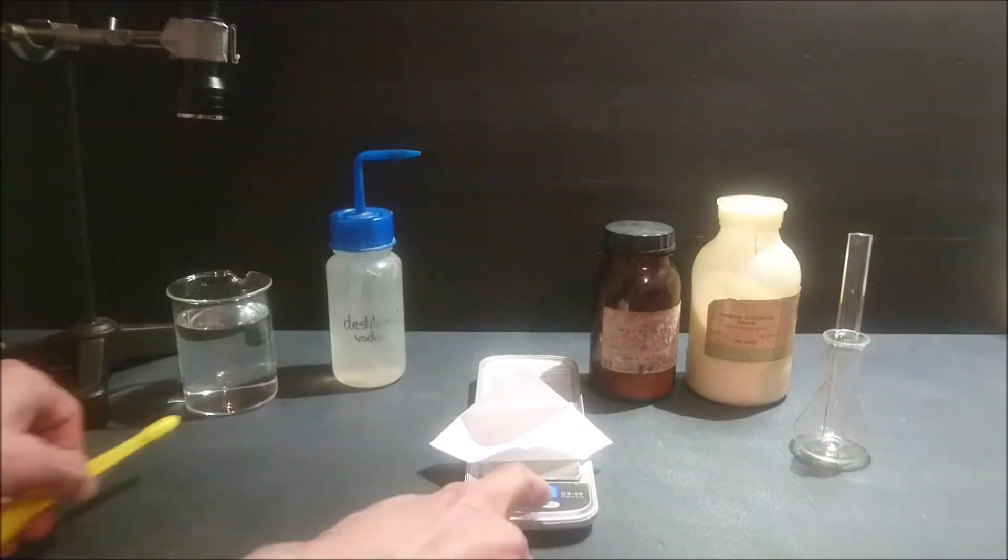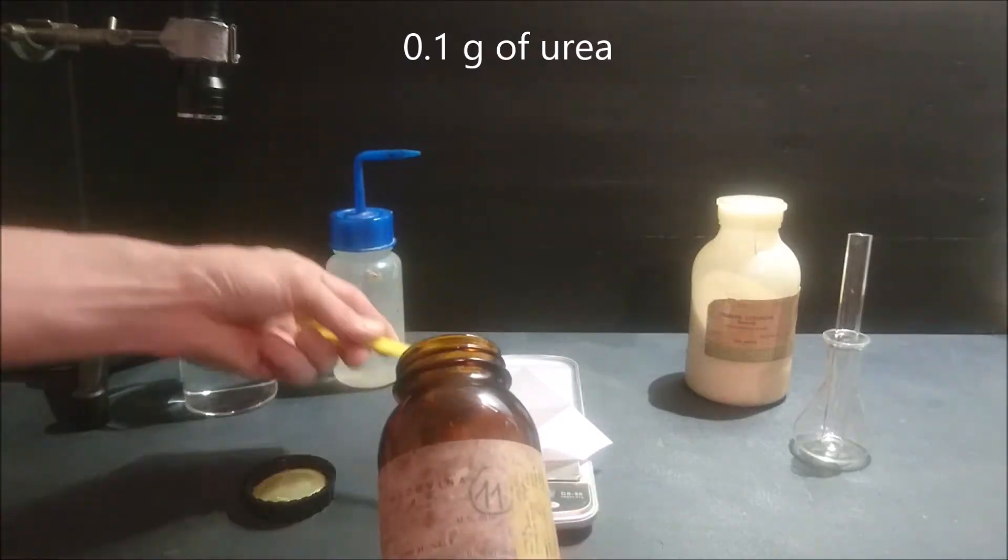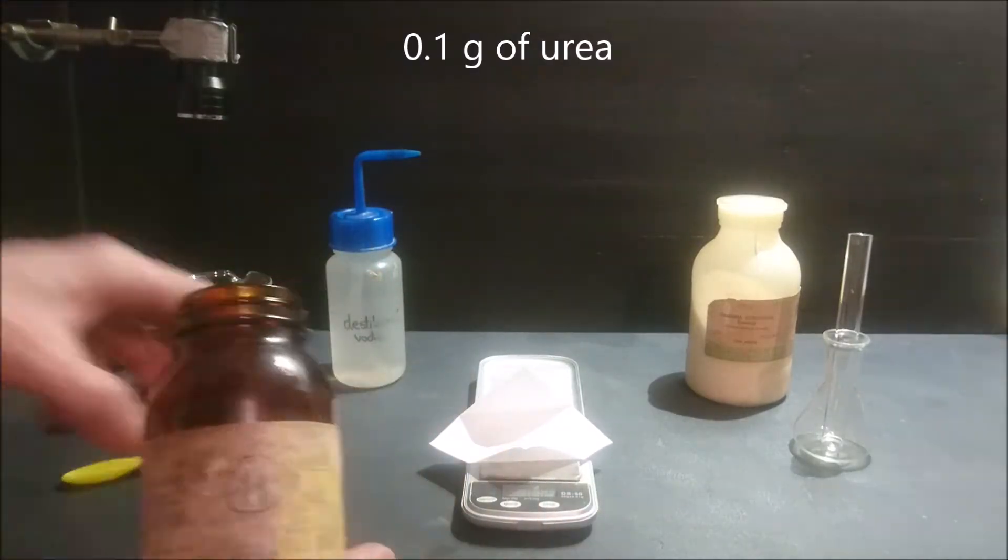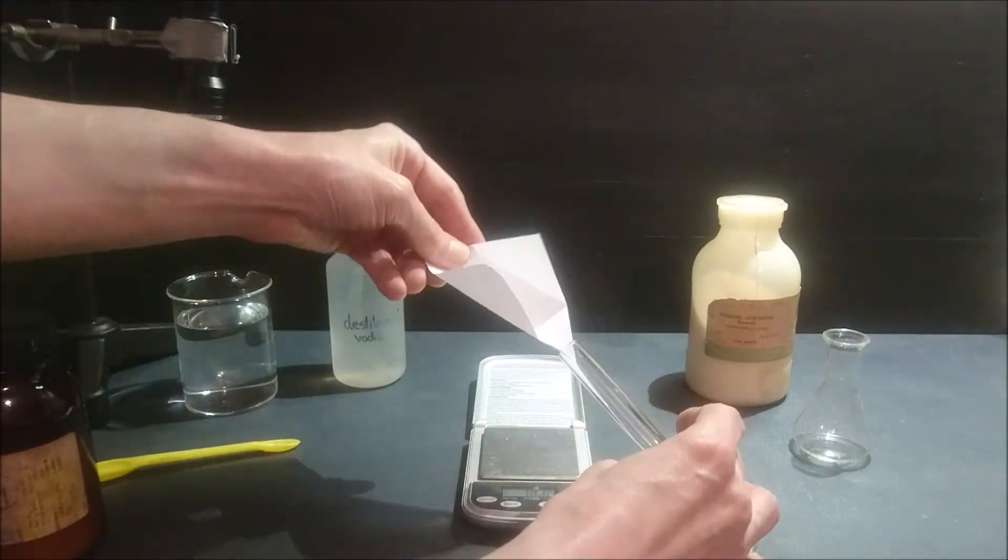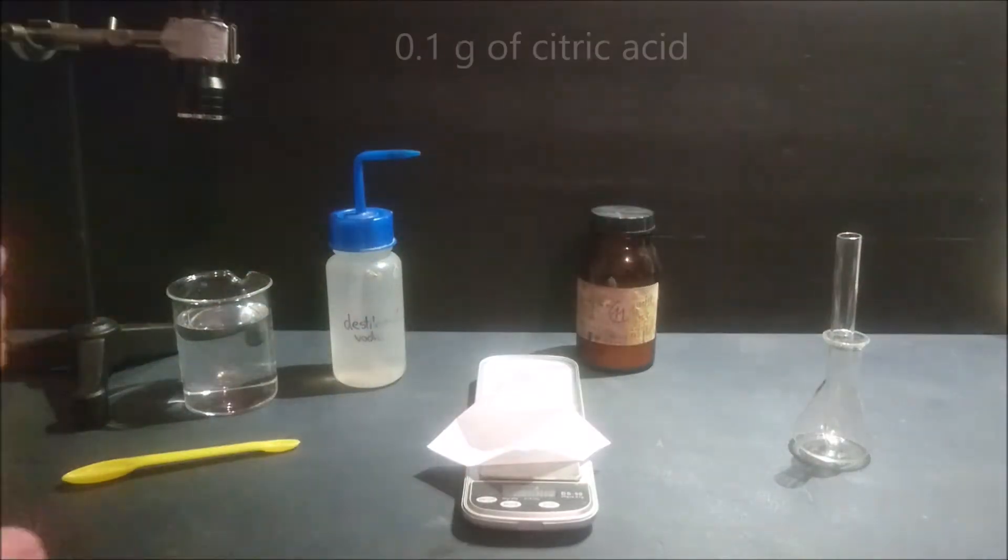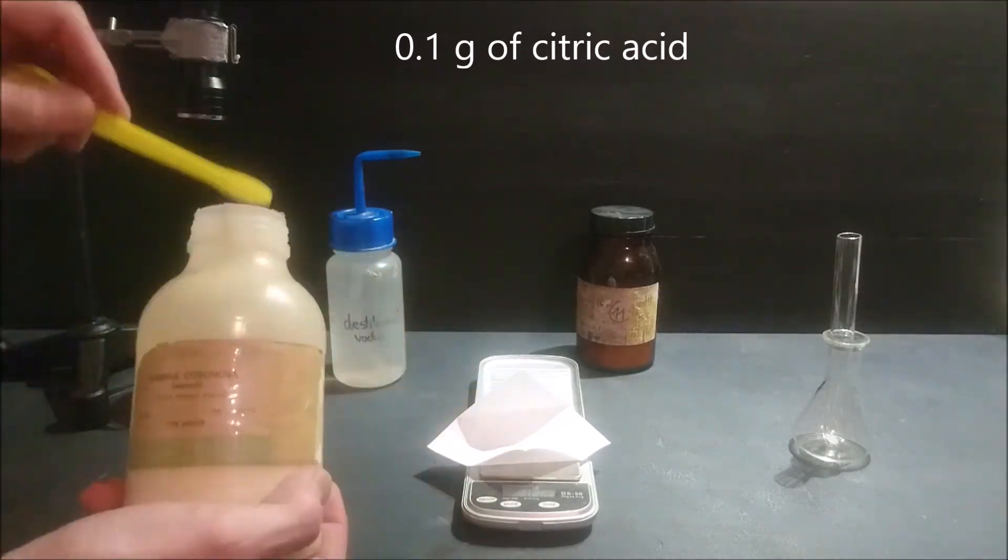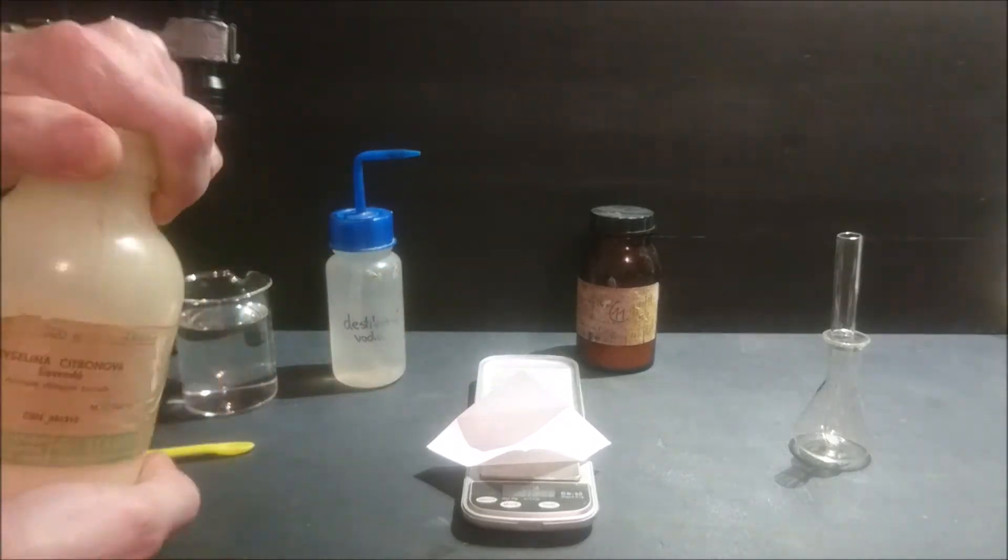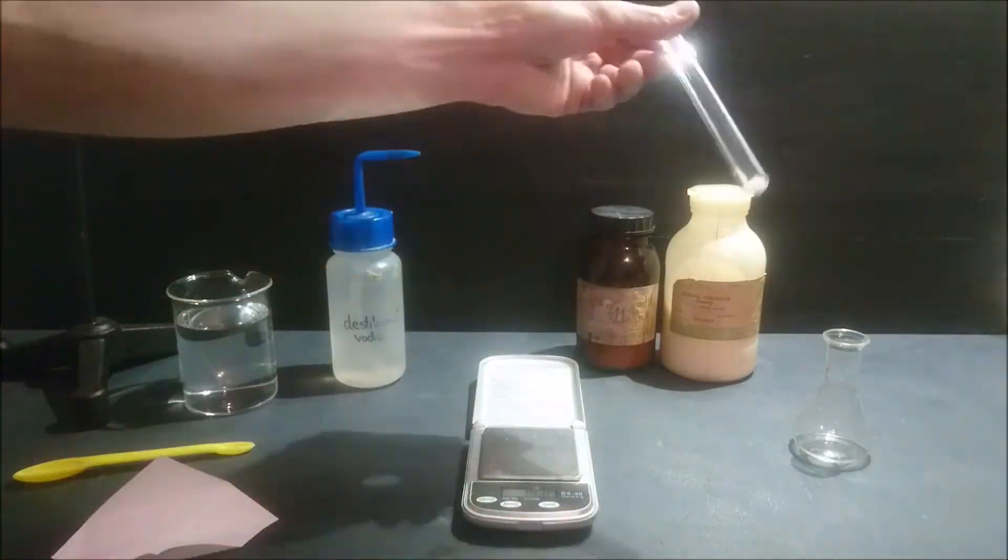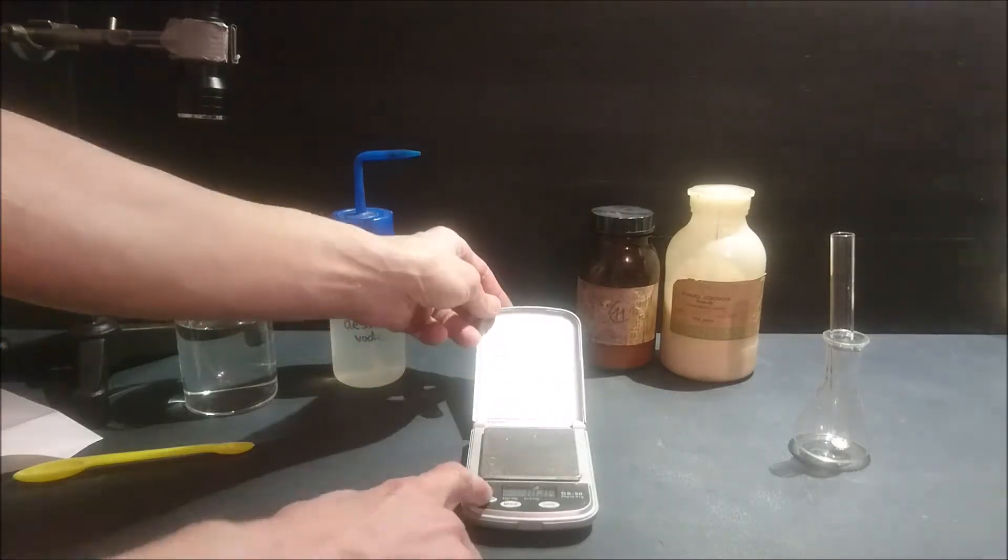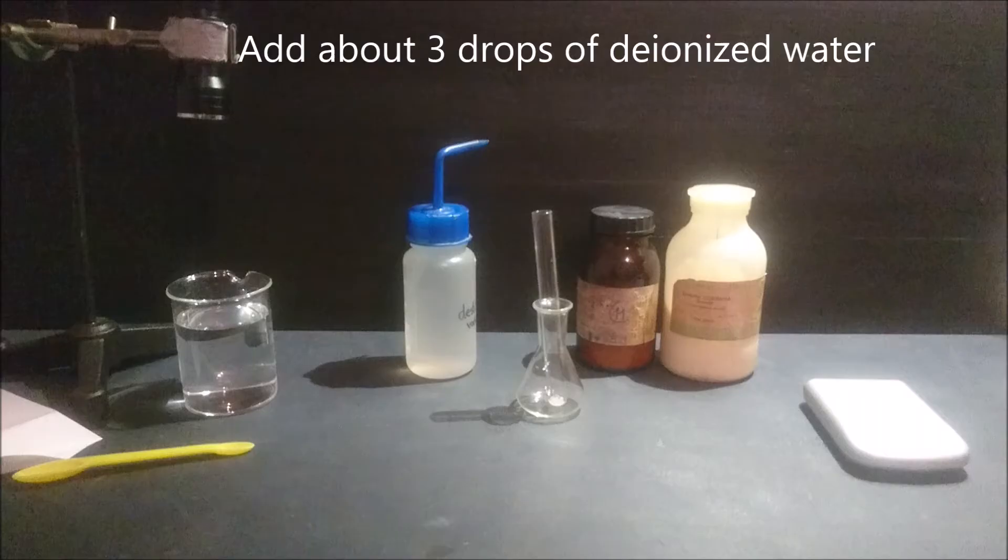Weigh about 0.1 grams of each reagent and add them into a test tube. Moisten the reaction mixture with about 3 drops of deionized water.